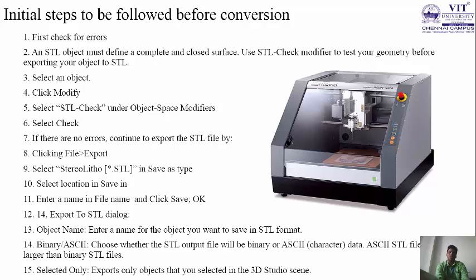Select Stereolithography (.STL) in Save As Type. Select the location in Save In. Enter a file name and click Save, then give OK. In the Export to STL dialog, under Object Name, enter a name for the object you want to save in STL format.